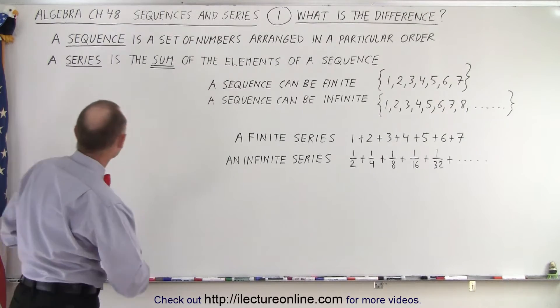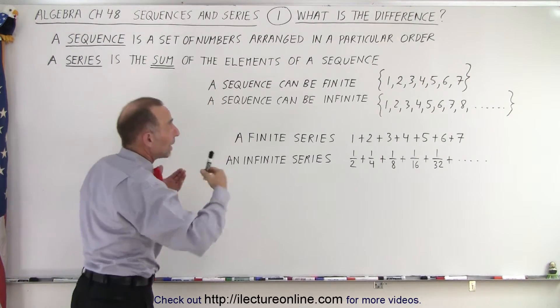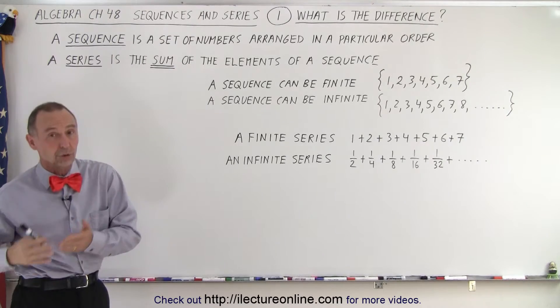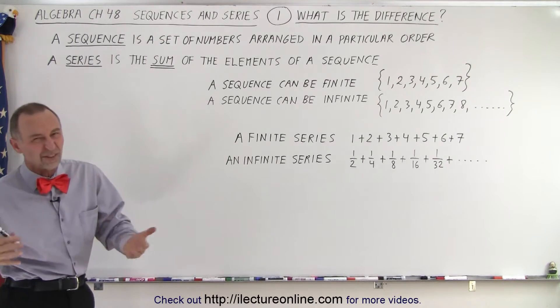The main difference is that a sequence is a set of numbers arranged in a particular order, from small to large, from large to small, which is a typical arrangement.